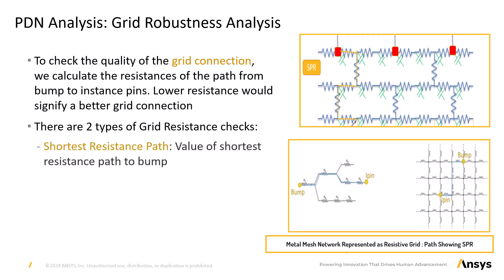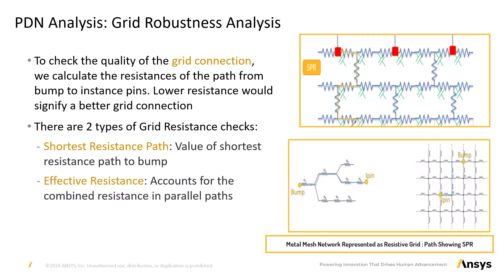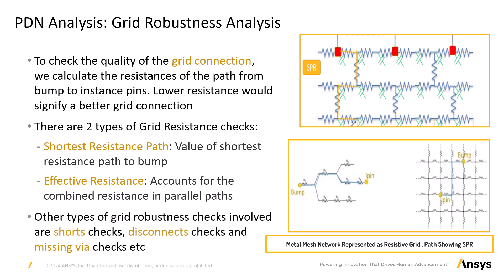Shortest resistance path: this refers to the value of the single shortest resistance path to a bump. The shortest resistance path is vital in the development and analysis of on-die power grids as it minimizes electrical resistances, thus decreasing power loss in the high current path. Effective resistance: the effective resistance check is crucial as it considers the combined resistance in multiple parallel paths. This helps optimize the grid architecture to minimize voltage drops. Other types of grid robustness checks include short checks, disconnect checks and missing wire checks.